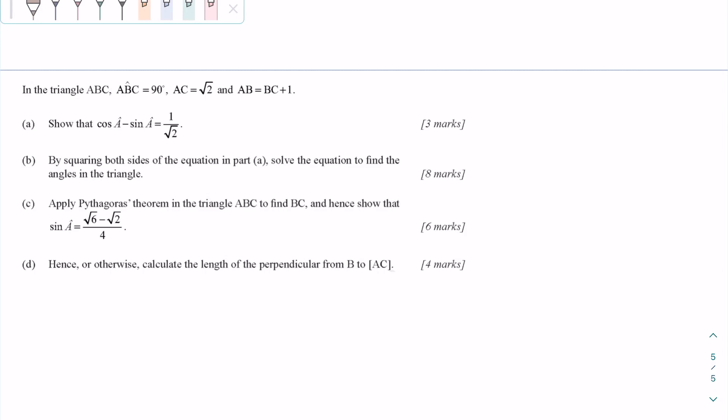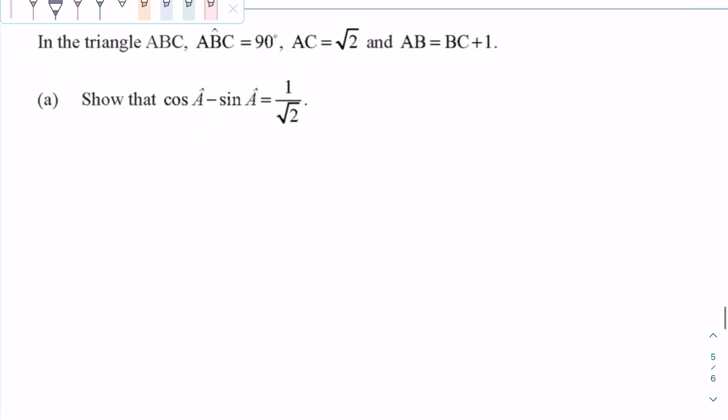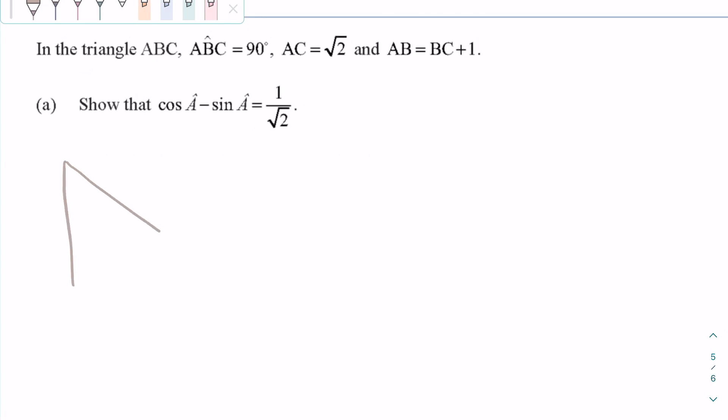In this video, I'll show you how to solve this multi-step IB past exam question. In part A, we will start drawing the triangle, which is a right angle triangle because one of its angles is 90 degrees.